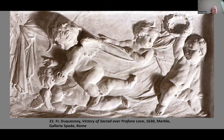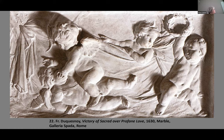Duquesnoy also did beautiful low reliefs, such as the 'Victory of Sacred over Profane Love,' which looks almost as if he's drawing from Donatello in the way he sculpts, with beautiful little cherubs all around — but very, very classical. He died much too young at 46, at the peak of his career.